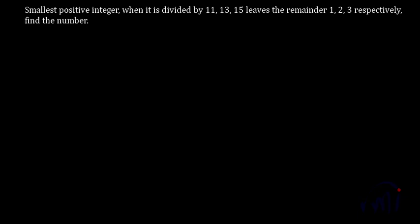So here we have to find the smallest positive number when it is divided by 11, 13, and 15 leaves remainder 1, 2, 3 respectively.